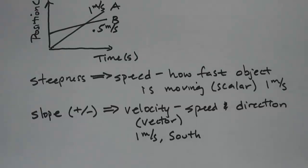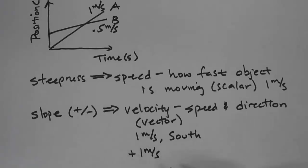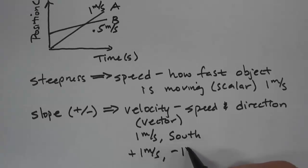We can use positive or negative to indicate direction. So I can have positive 1 meter per second, and let's say north is positive. Then south would be negative — so negative 1 meter per second would represent south.